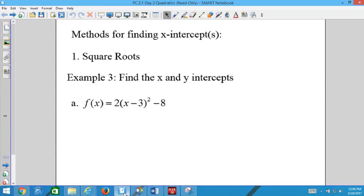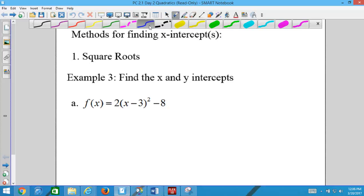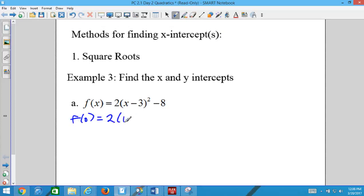How do you find x or y-intercepts? Plug in 0 for the other variable. So if I want to find the y-intercept, let's find the y-intercept real fast. How do we find the y-intercept? Plug in 0 for x. So you do f of 0, 2 times 0 minus 3 squared minus 8. We plug in 0 and we get 10. So the y-intercept is 0, 10.